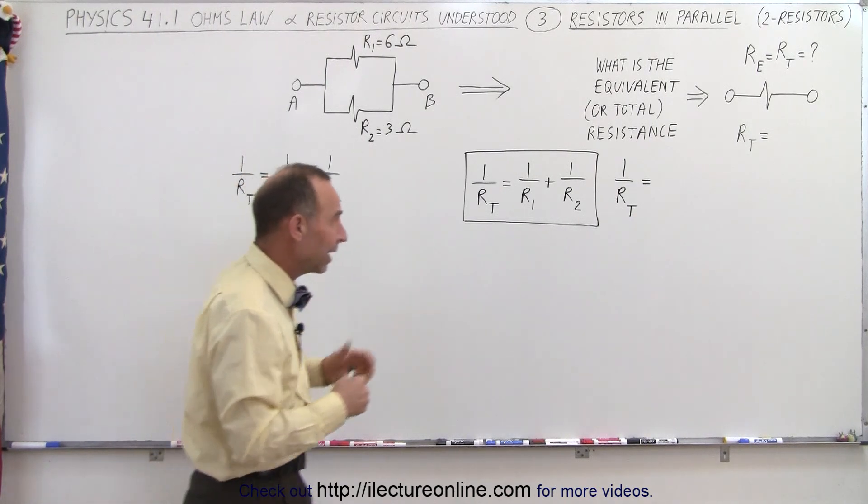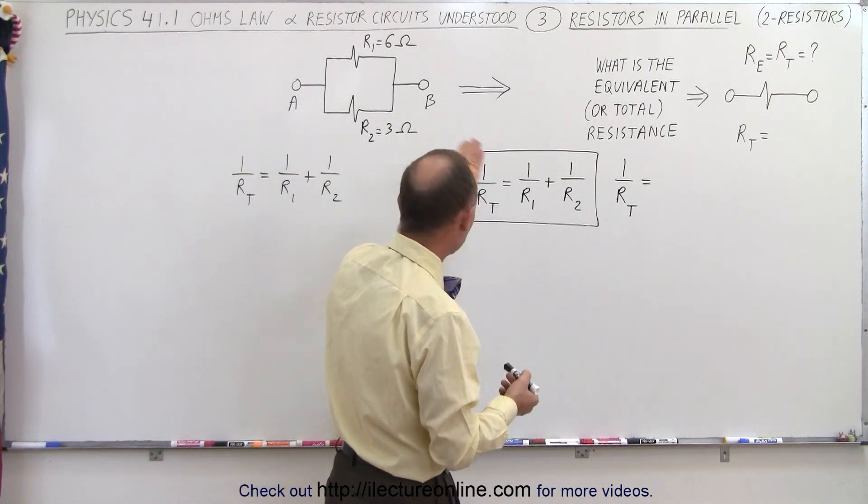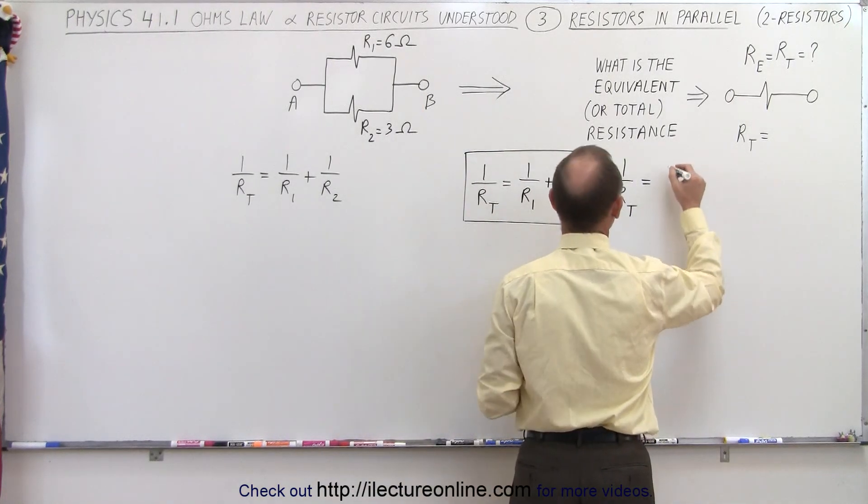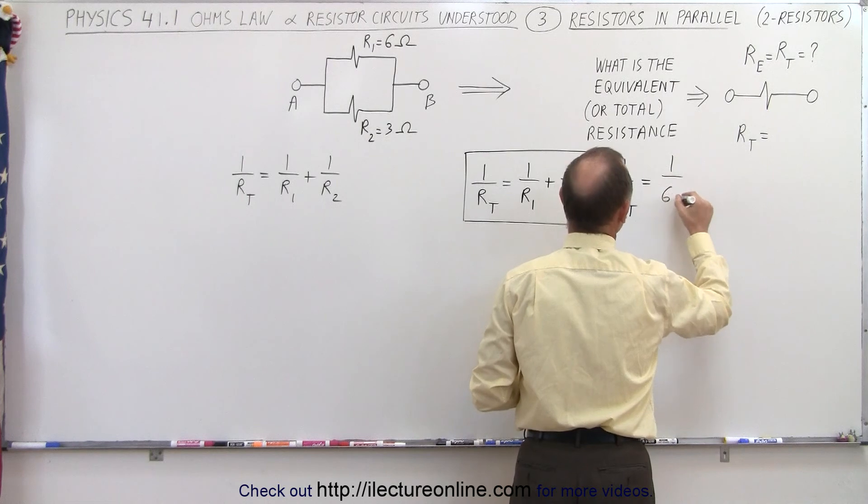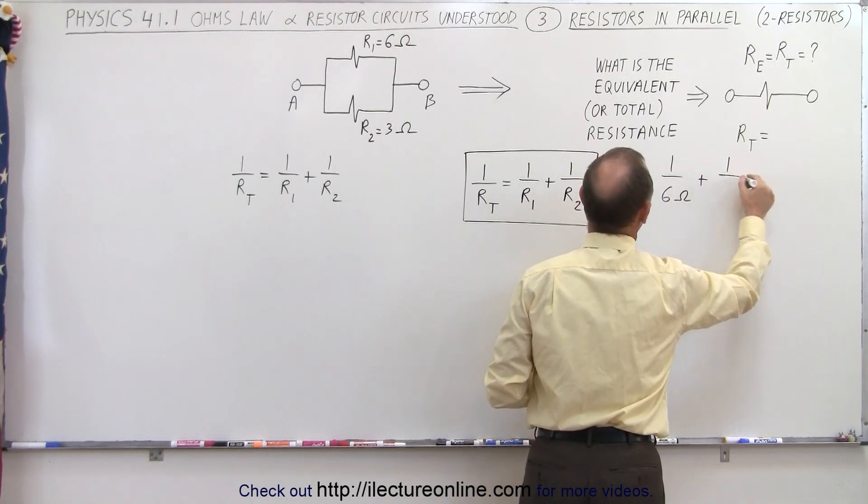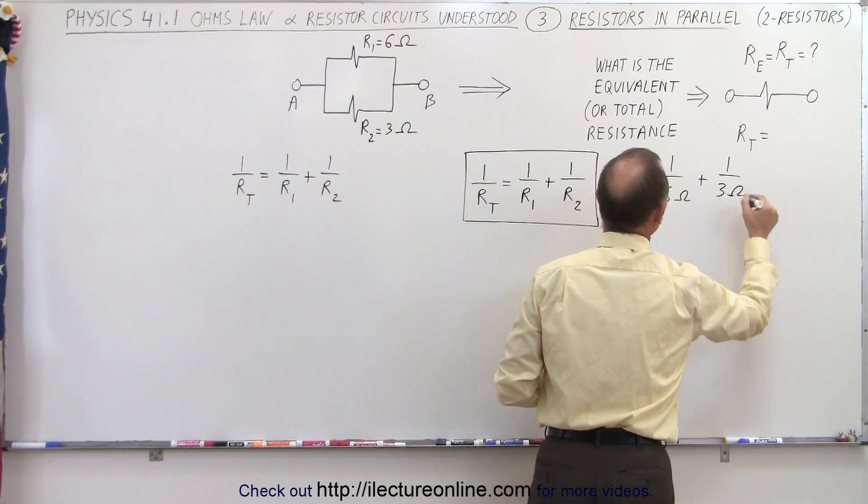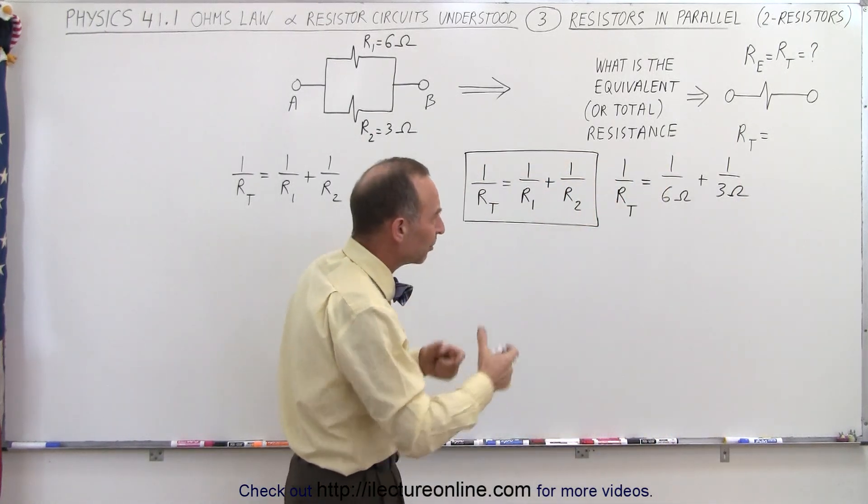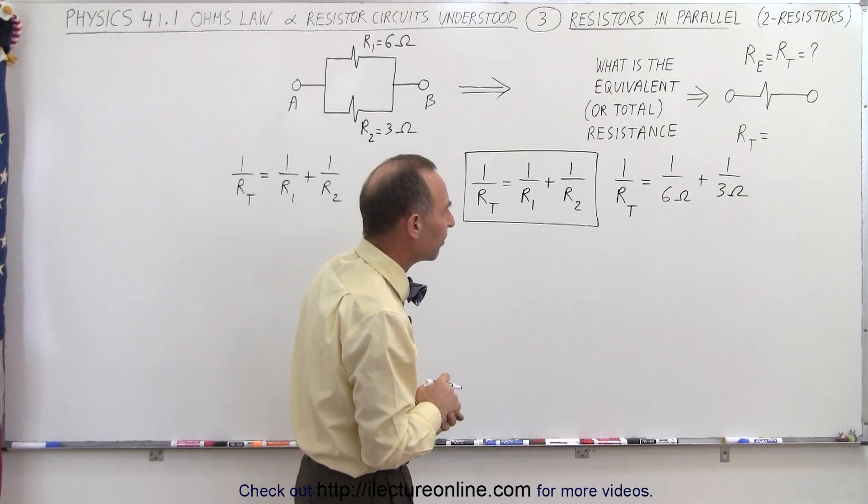But first, let's go ahead and calculate the total resistance of this example right here. So in this case, that would be equal to 1 over R1, which is 6 ohms. So 1 over 6 ohms plus 1 over 3 ohms. And usually, I like to leave the ohm symbol off because it makes it a little bit cleaner, but I'll leave it in there now just as an example.